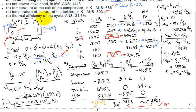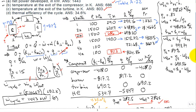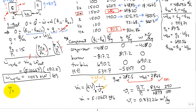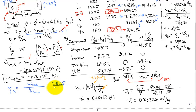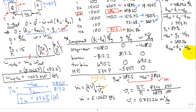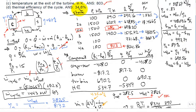For part D, the thermal efficiency of the cycle is w_net divided by q_burner: η = 282.5 / 817.2 = 34.6%. That completes all four parts of the problem.